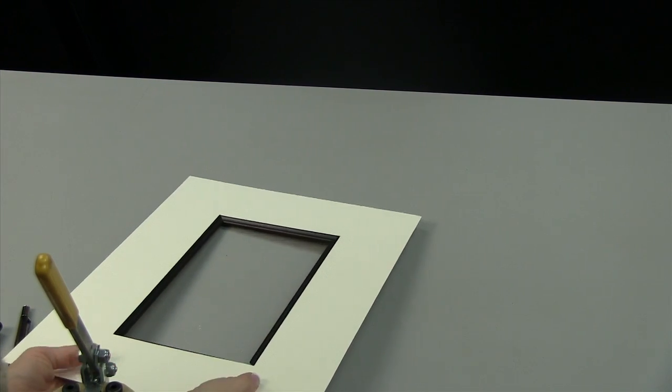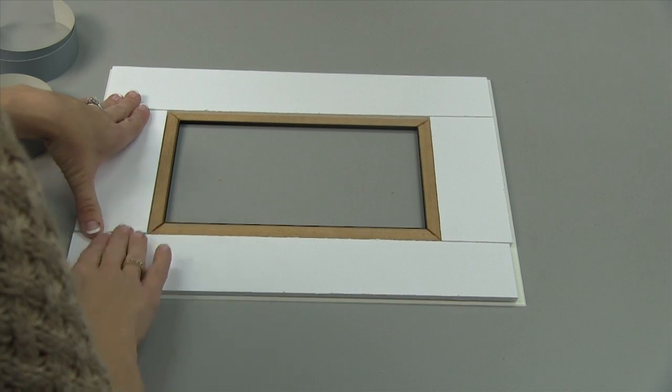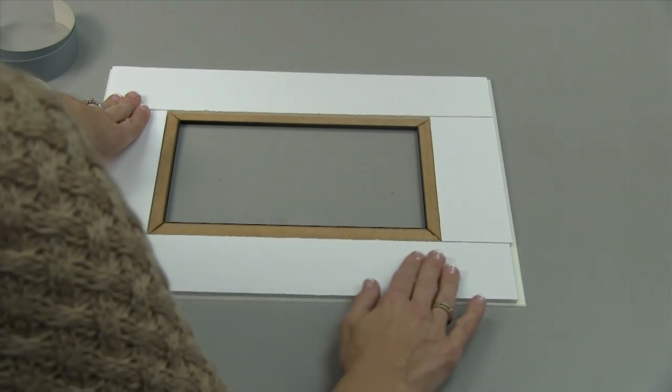Once complete, the fillet may extend higher than the back of the mat by about an eighth inch. To level off the back, cut foam board strips to fit around each side.